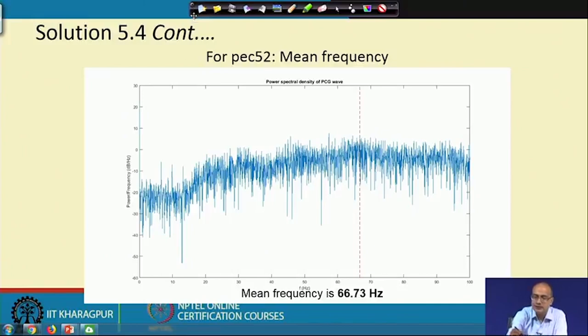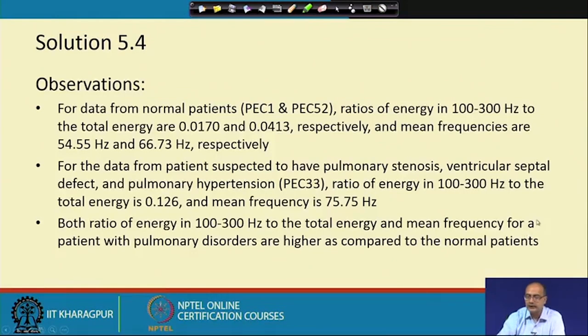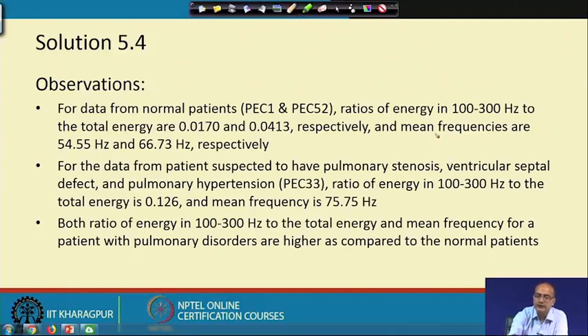As we have seen the PSD, the energy ratio, and the mean frequency, now we go for the conclusion. For the normal patients PEC1 and PEC52, we get the ratio of energy between 100 and 300 hertz as 0.017 and 0.0413, that is 1.7 percent and 4.13 percent, and the mean frequencies are 54.55 and 66.73 hertz. Among normal patients, there is some variation—it is not always remaining the same.